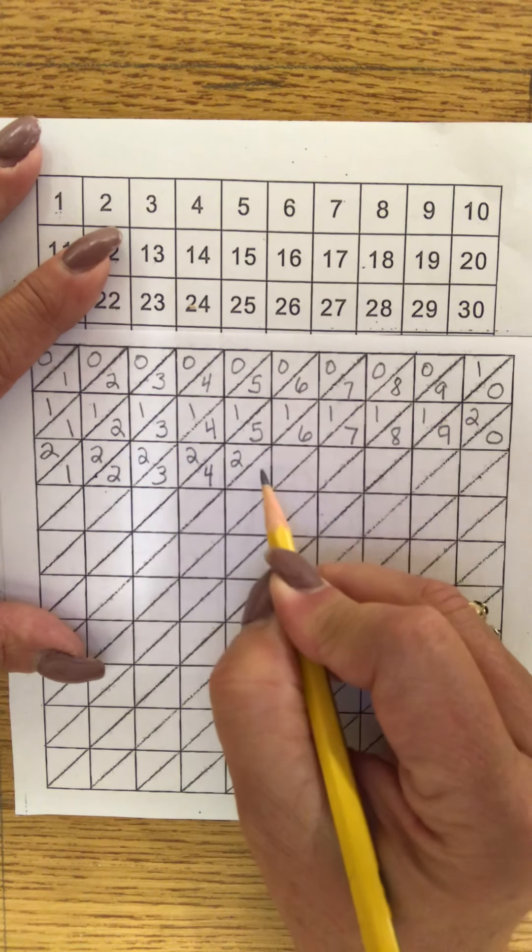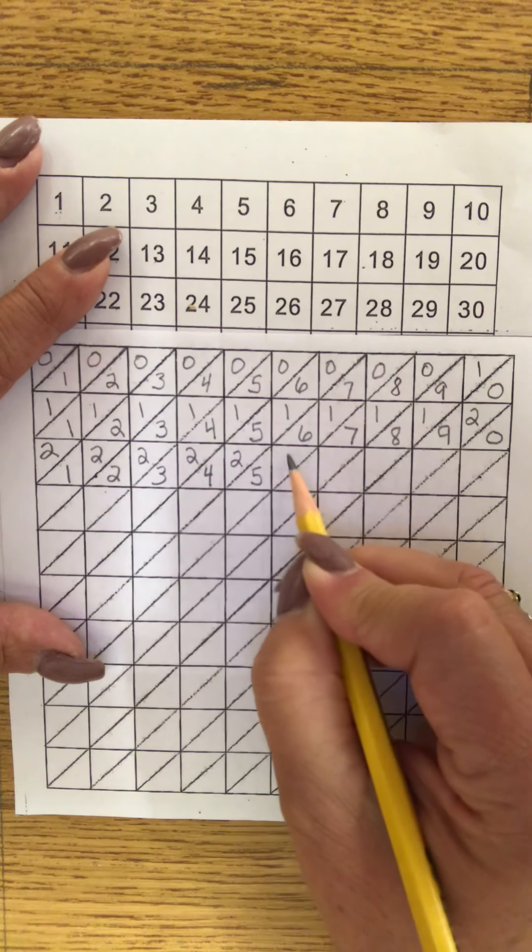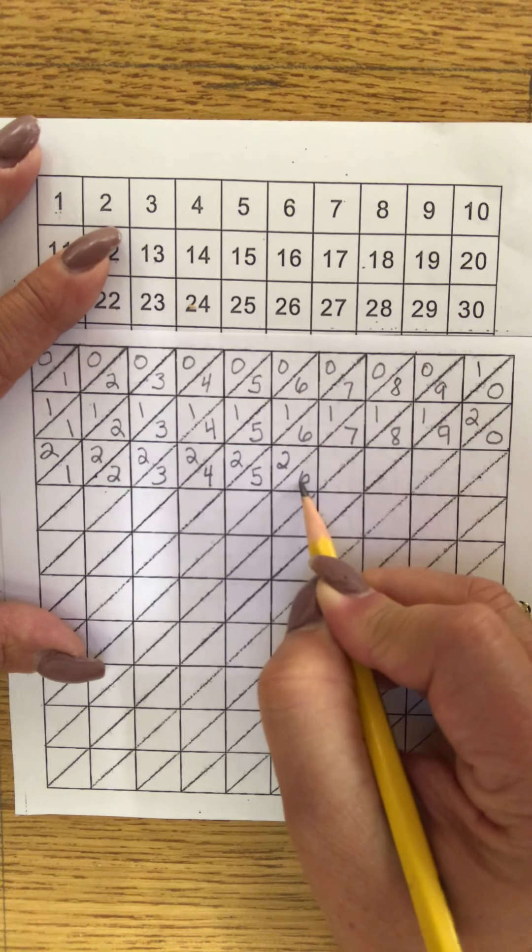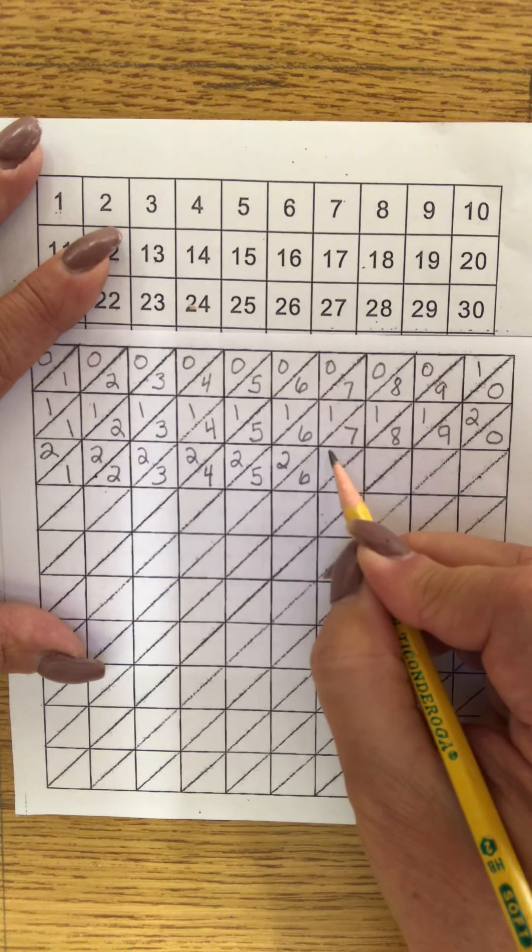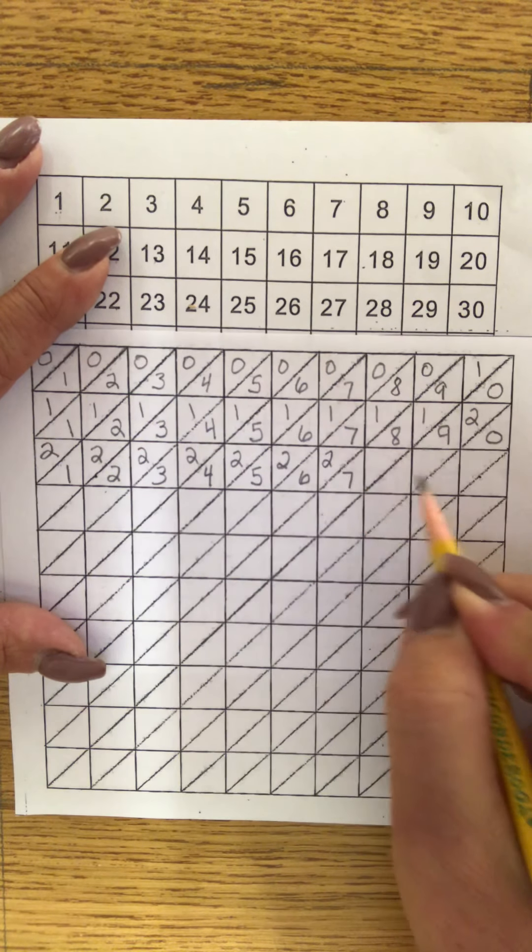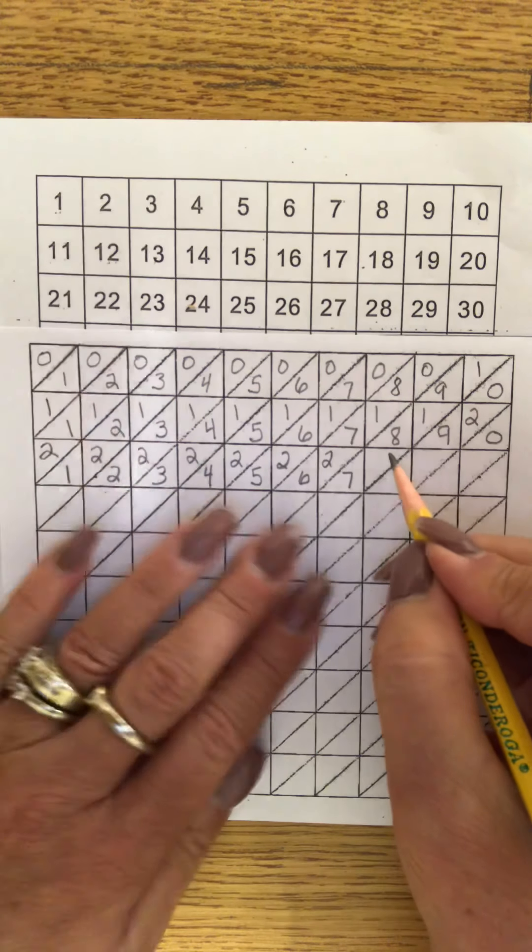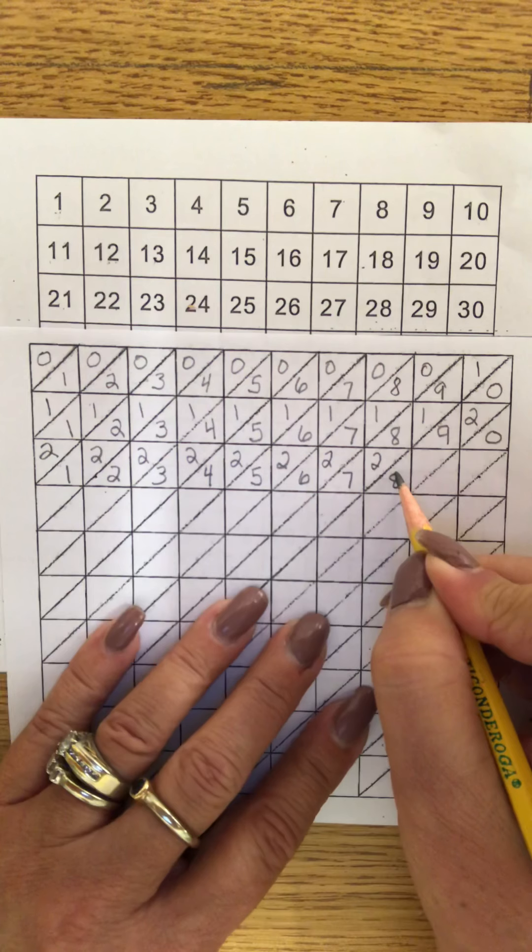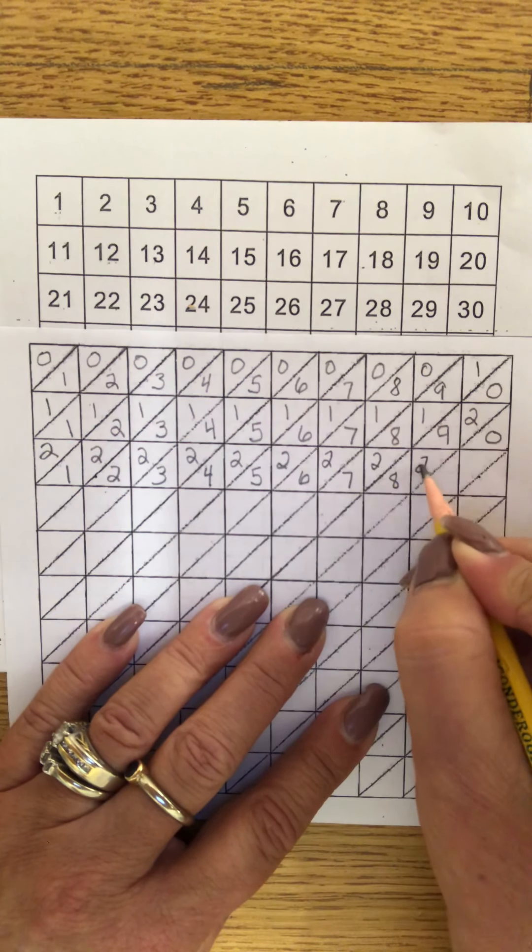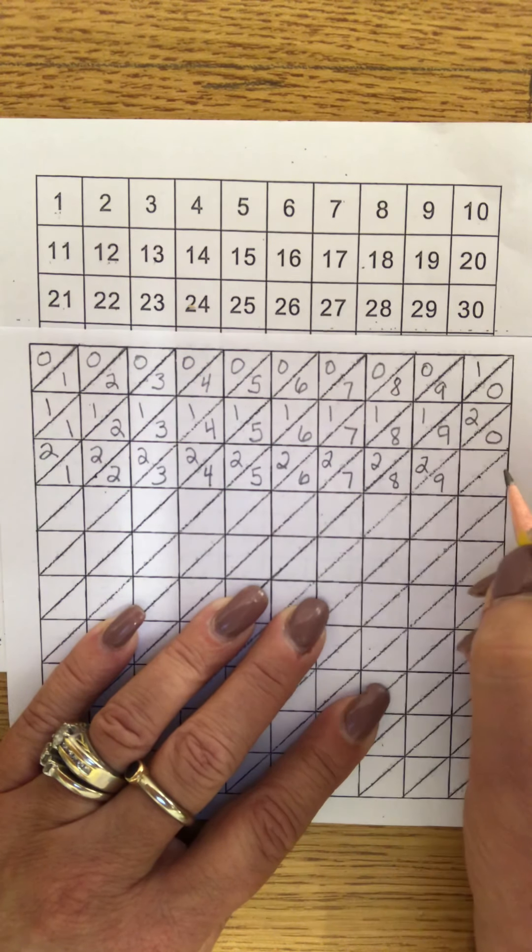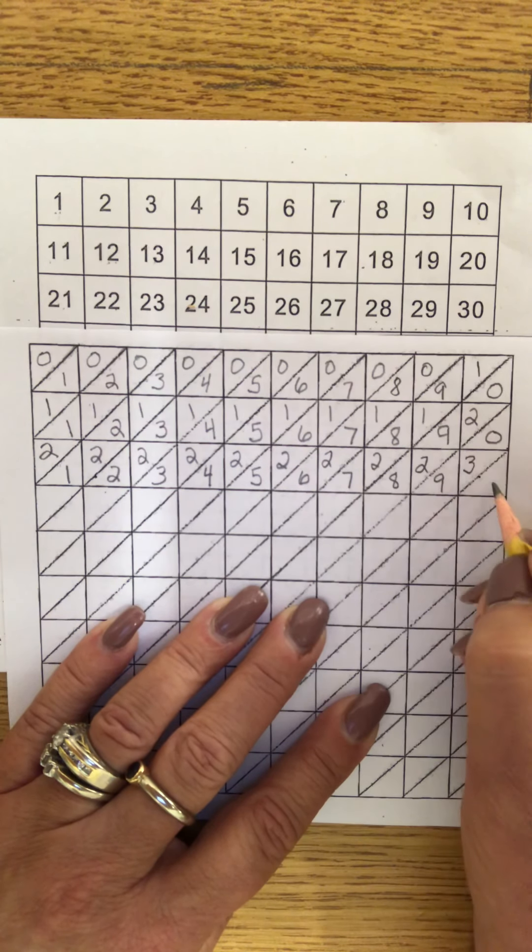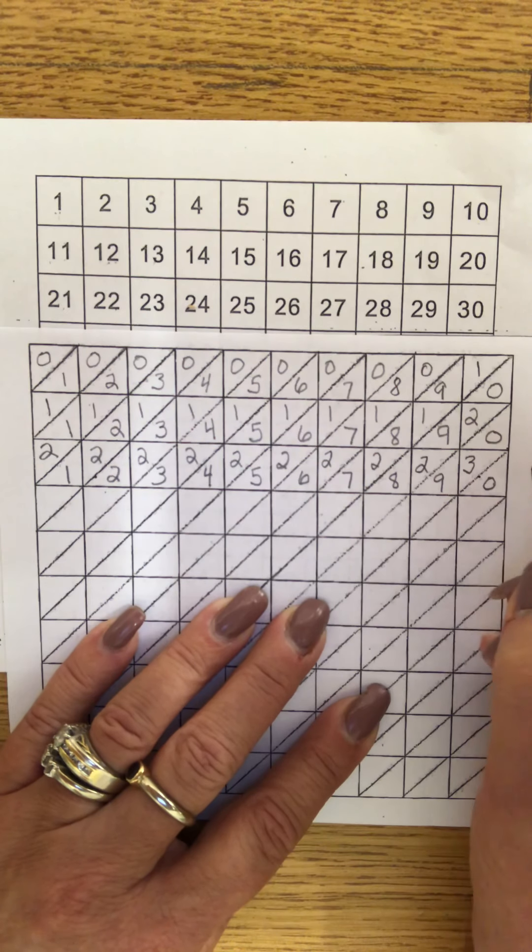Two tens, five ones, 25. Two tens, six ones, 26. Two tens, seven ones, 27. Two tens, eight ones, 28. Two tens, nine ones, 29. Three tens, zero ones, 30. Do you know what comes next? Can you follow the pattern?